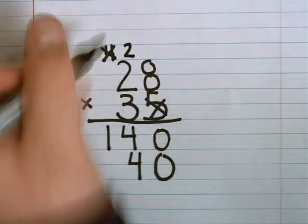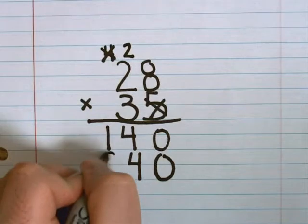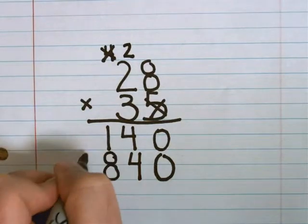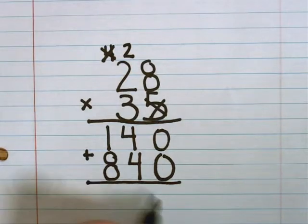Then multiply 8 by 3, which gives me 24. Carry the 2. 3 multiplied by 2 is 6. Add the two extras that you carried. Makes 8.